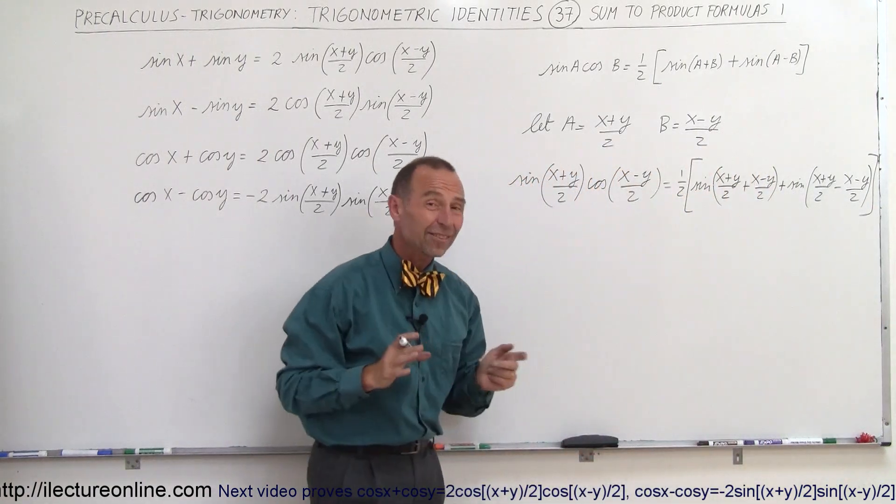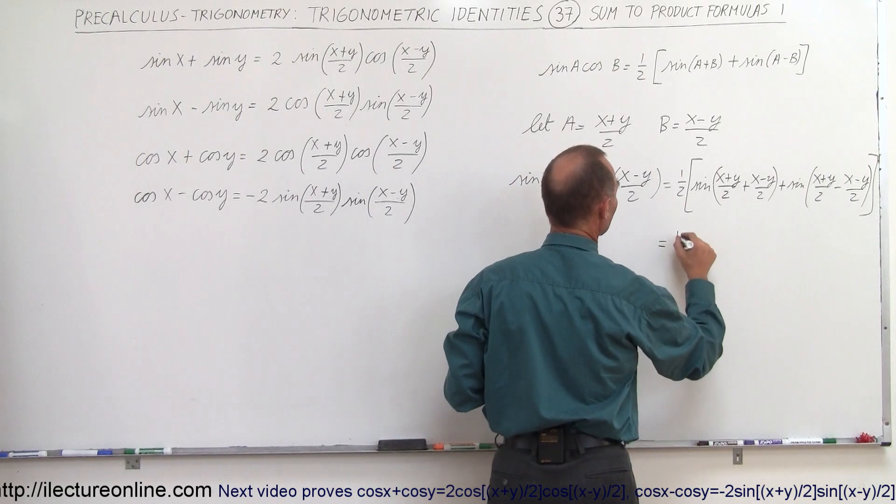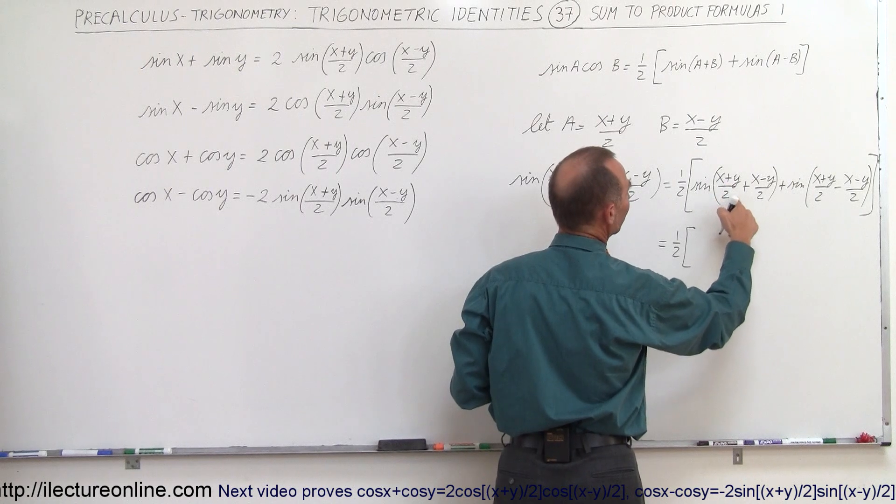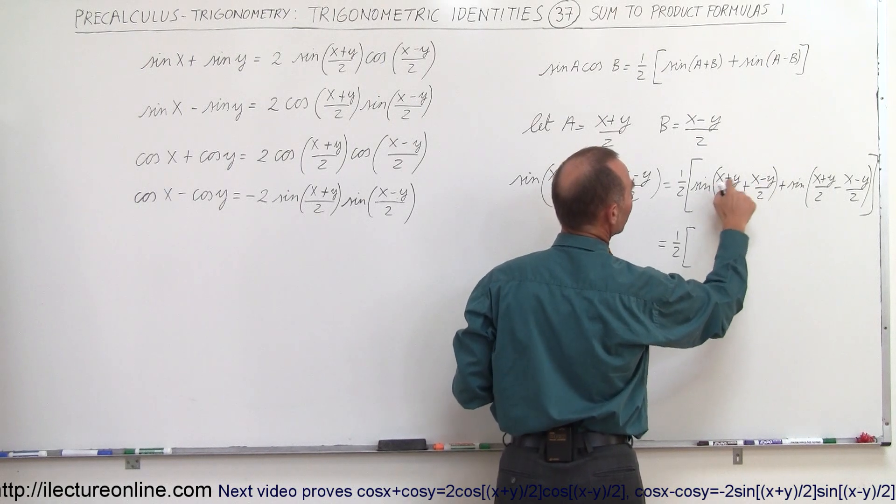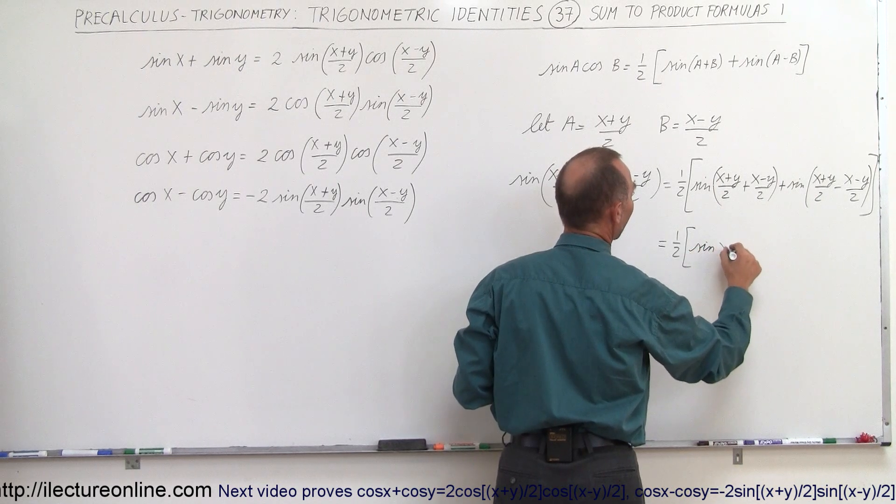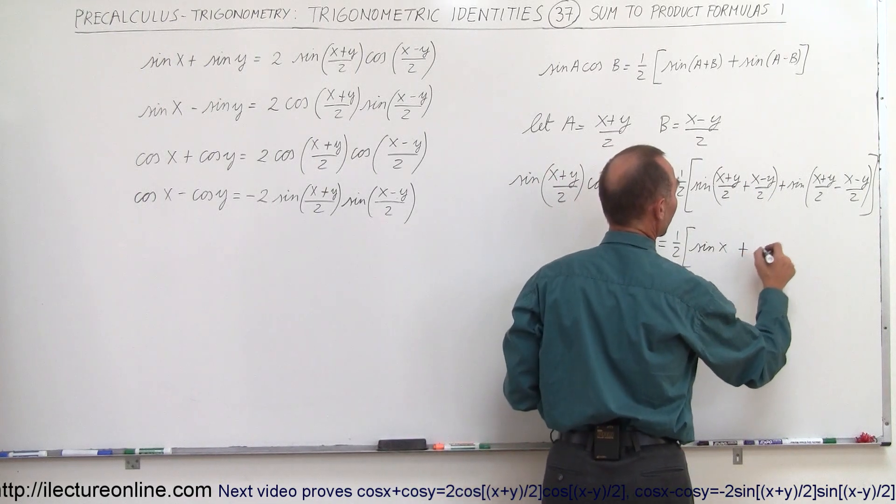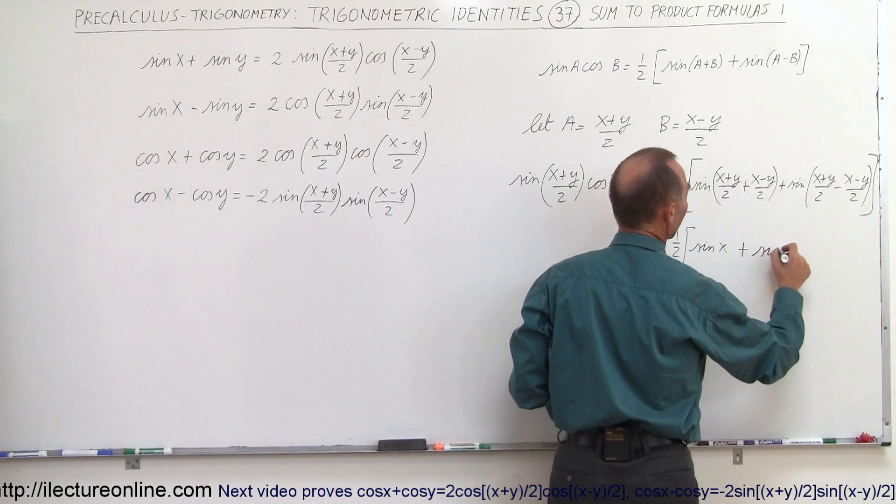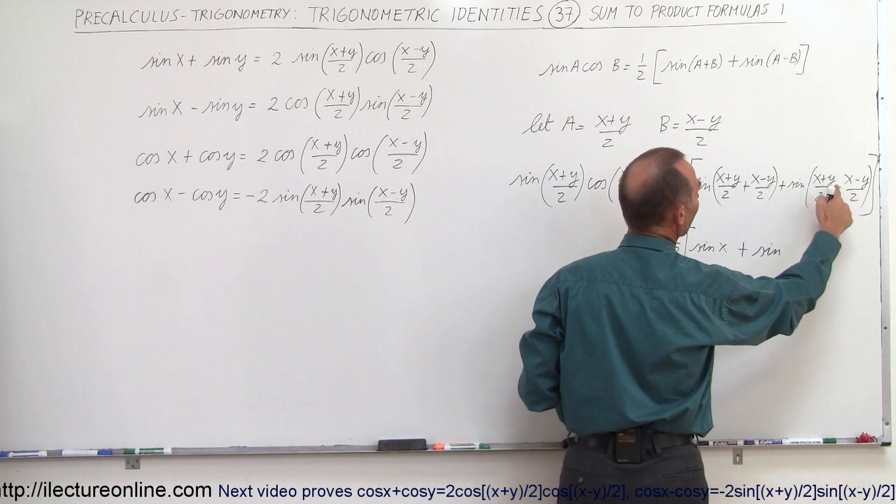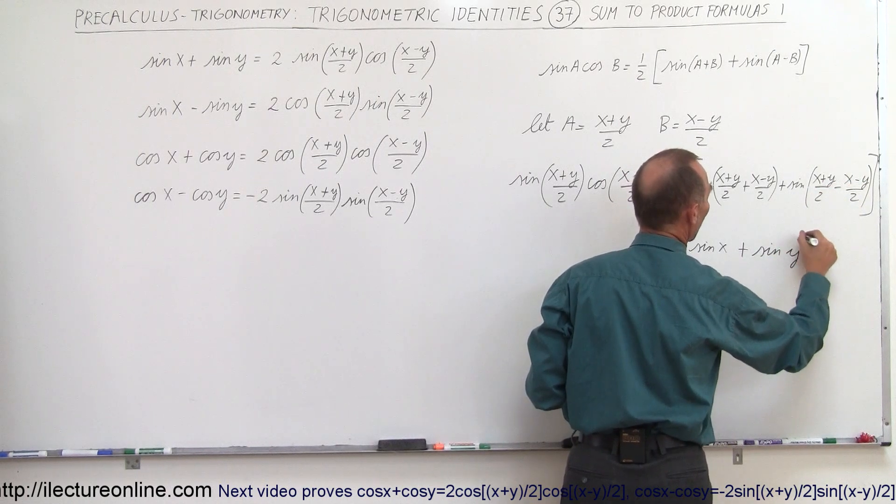Alright, now let's simplify that. The left side doesn't change but the right side does. So this is equal to 1 half times the sine of x plus y divided by 2 plus x minus y that would be x plus x is 2x divided by 2 is x so we have the sine of x and y minus y is 0 so simply the sine of x plus the sine of and here we have x minus x so the x's disappear and y minus minus y, minus times minus is plus that would be 2y divided by 2 which is simply y.